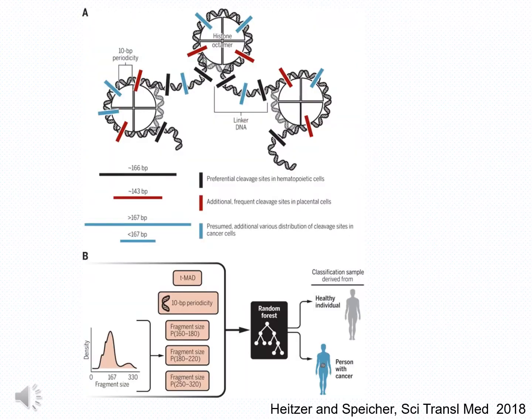In the next slide, I show diagrammatically how the DNA, which is prepackaged in chromatin, can be fragmented at various places, generating a heterogeneous group of fragments between 160 and 220 nucleotides long. There is heterogeneity in the fragmentation in both healthy individuals and persons with cancer.